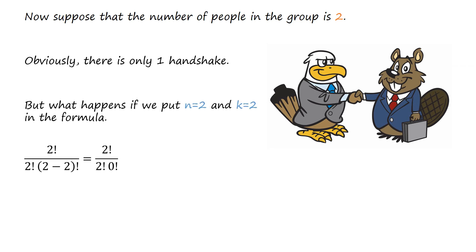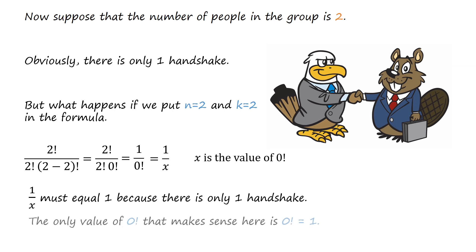But what happens if we put n equals 2 and k equals 2 in the formula? We get 1 divided by 0 factorial, which can be written as 1 divided by x, where x is the value of 0 factorial. 1 divided by x must equal 1 because there is only one handshake. The only value of 0 factorial that makes sense here is 0 factorial equals 1, and so we define 0 factorial equals 1.